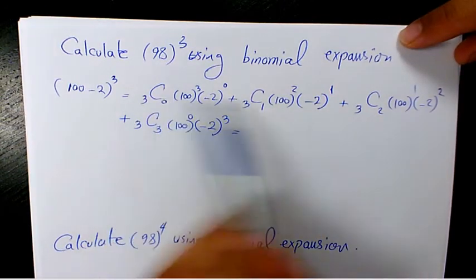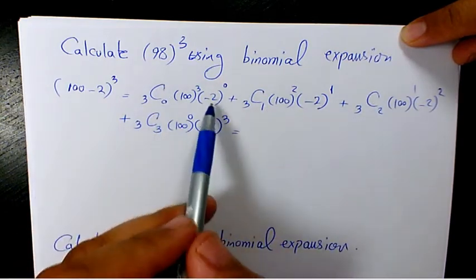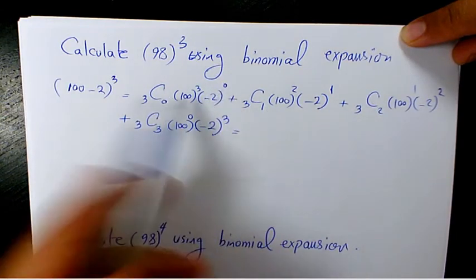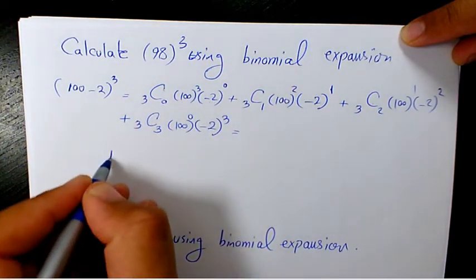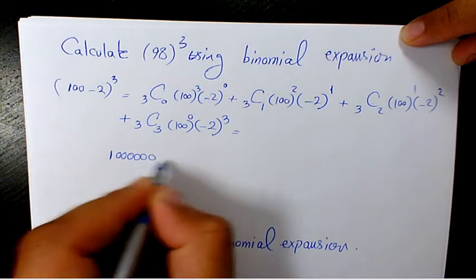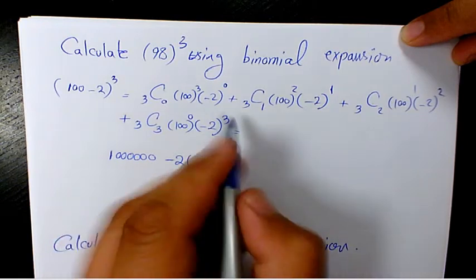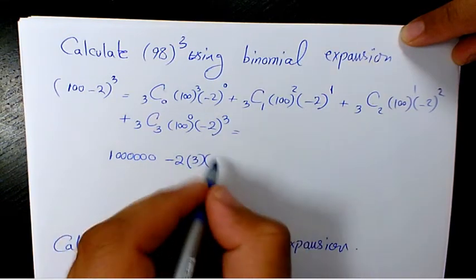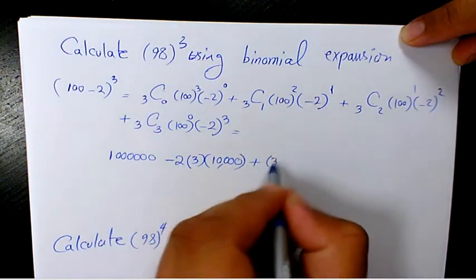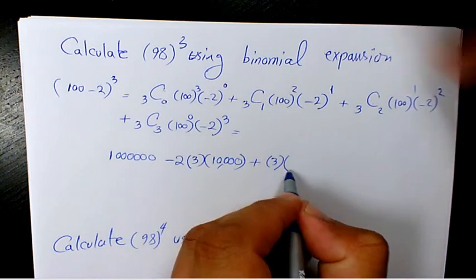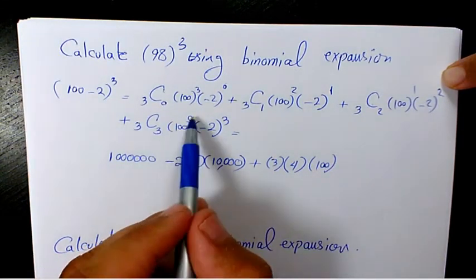Now we simplify. The coefficients from Pascal's triangle are 1, 3, 3, 1. Negative 2 to the power of 0 is 1, so the first term is 1 times 1 times 100 cubed, which is 1,000,000. Then minus 2 times 3 times 100 squared, which is 10,000. Then plus 3 times negative 2 squared, which is 4, times 100.